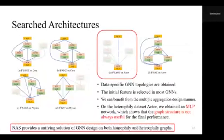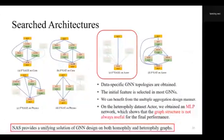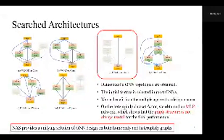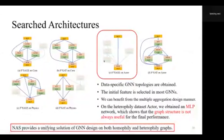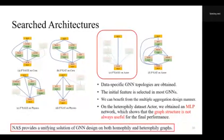The searched architectures are provided, from which we can observe data-specific GNNs obtained. The initial features from the input block are selected in most GNNs. We can also benefit from the multiple aggregation operation design manner because most GNNs have two aggregation operations in one layer. On the heterophily dataset Actor, we obtained an MLP network directly, which shows that graph structure is not always useful for final performance — consistent with existing methods. In other words, NAS provides a unifying solution for GNN designs on both homophily and heterophily graphs.